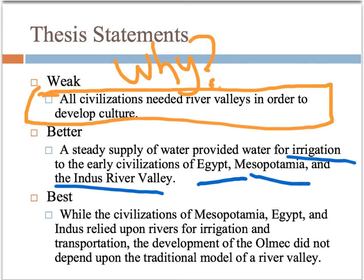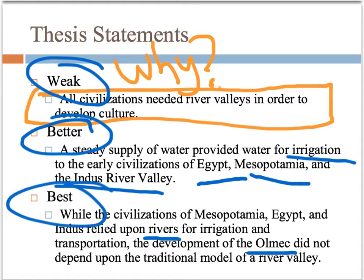The previous example didn't discuss the rise of religion, political systems, economics, or writing. Something better than those two: 'While the civilizations of Mesopotamia, Egypt, and Indus relied upon rivers for irrigation and transportation, the development of the Olmec did not depend upon the traditional model of a river valley.' So you're making a distinction — Mesopotamia, Egypt, and Indus had that traditional river valley model, but the Olmec did not. Not a perfect thesis statement, but it's definitely the best of the three. You're being more descriptive, analyzing the quote, and you don't see the word 'I.' The thesis is only one sentence, but it takes a while to come up with — you have to look at your notes and analyze what the question is truly asking.